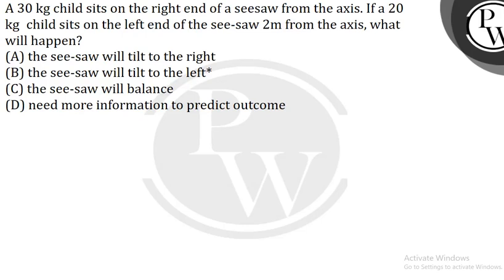When a 30 kg child sits on the right end of a seesaw 1 meter from the axis, and a 20 kg child sits on the left end of the seesaw 2 meters from the axis, we can determine what will happen by understanding the concept of torque and the principle of moments. The torque produced by each child around the fulcrum is equal to the product of their weight and the distance from the pivot.